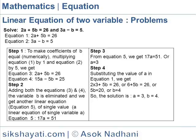Multiplying equation one by 1 gives equation three: 2a plus 5b equals 26. Multiplying equation two by 5 gives equation four: 15a minus 5b equals 25.